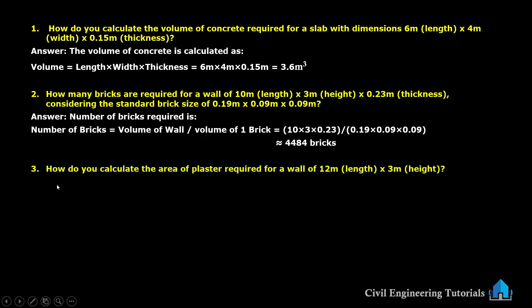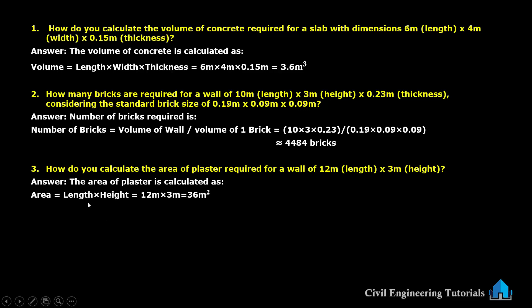Next question: how do you calculate the area of plaster required for a wall of 12 meter length and 3 meter height? The area of plaster is calculated as length × height: 12 × 3, giving us 36 square meters.